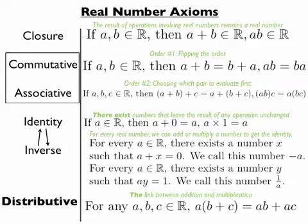The inverse is related to the identity in which we know that for any number there is a number that if we perform an operation with, we'll get back to the identity. So for every a in the real numbers, there exists an x such that a plus x equals 0.